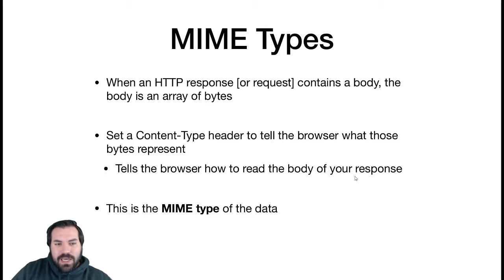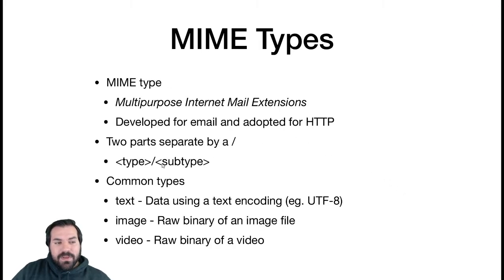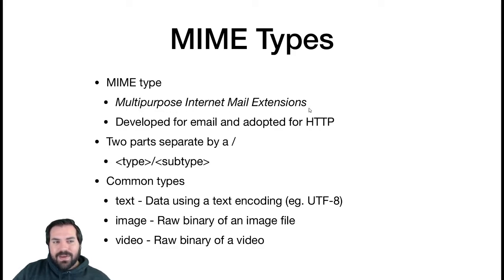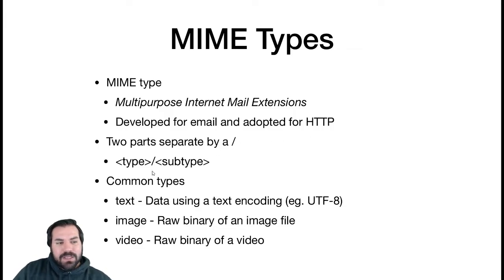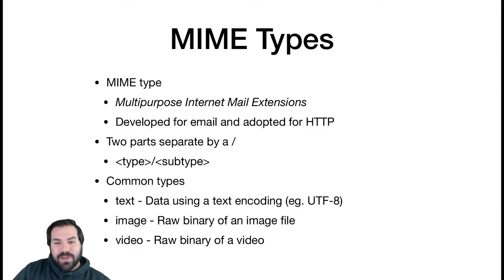The content-type header tells the browser what type the data is. The format is: a type, then slash, then a subtype. This comes from the early days of email but has been adopted for HTTP. There are tons of MIME types — I have a link on the reading list that goes through every single one that's been submitted and approved. There are very few we'll actually use in this course compared to how many exist.